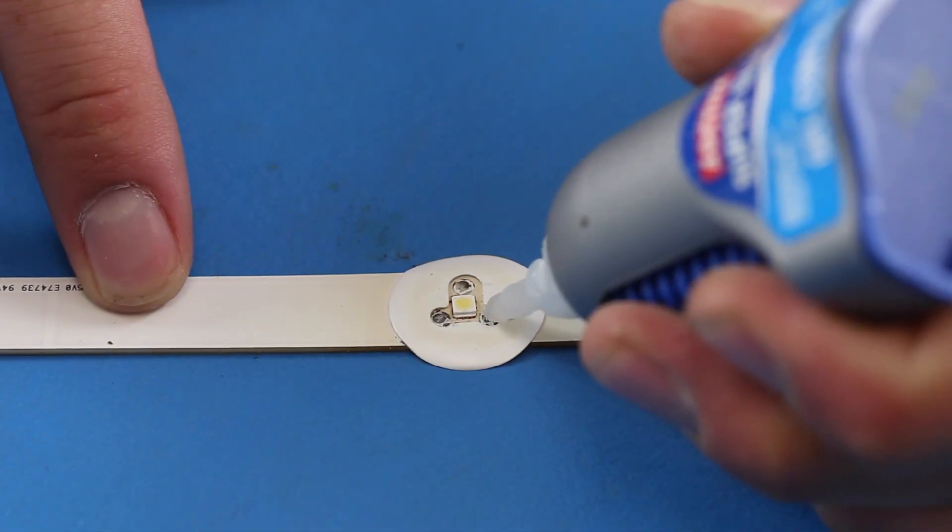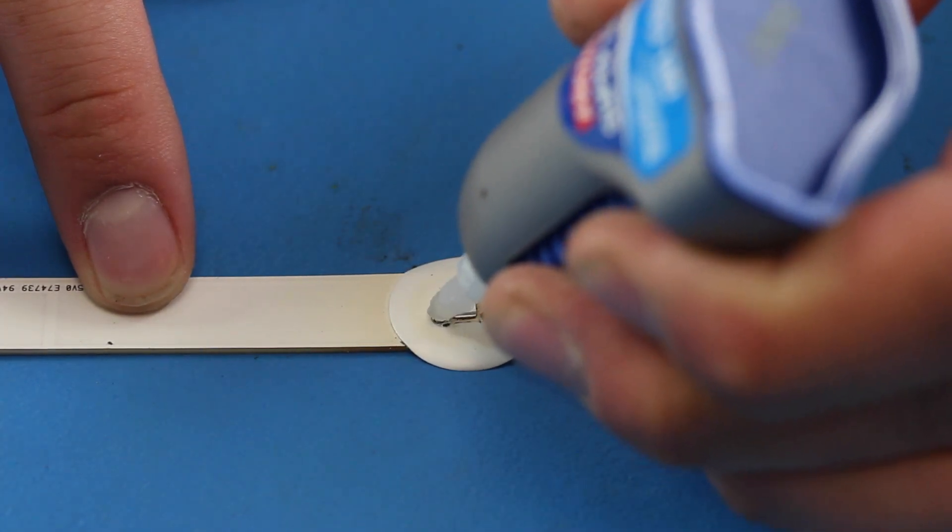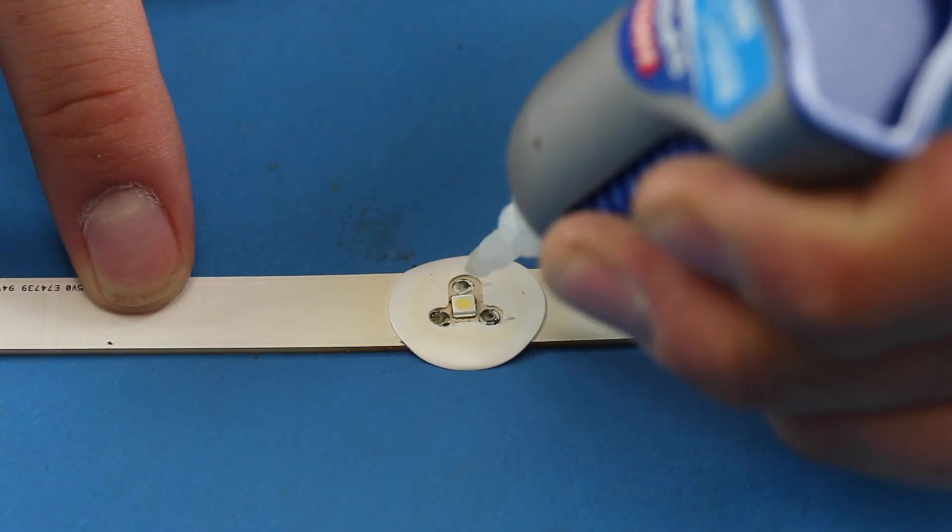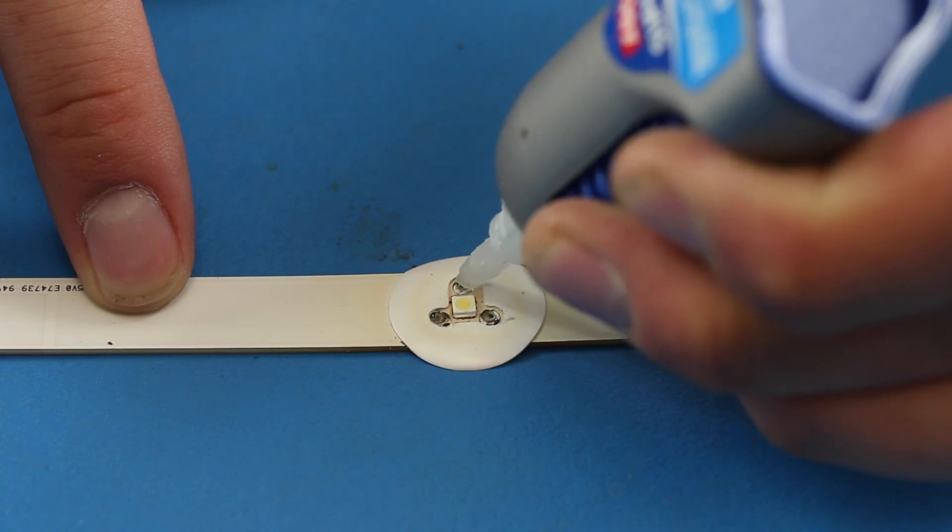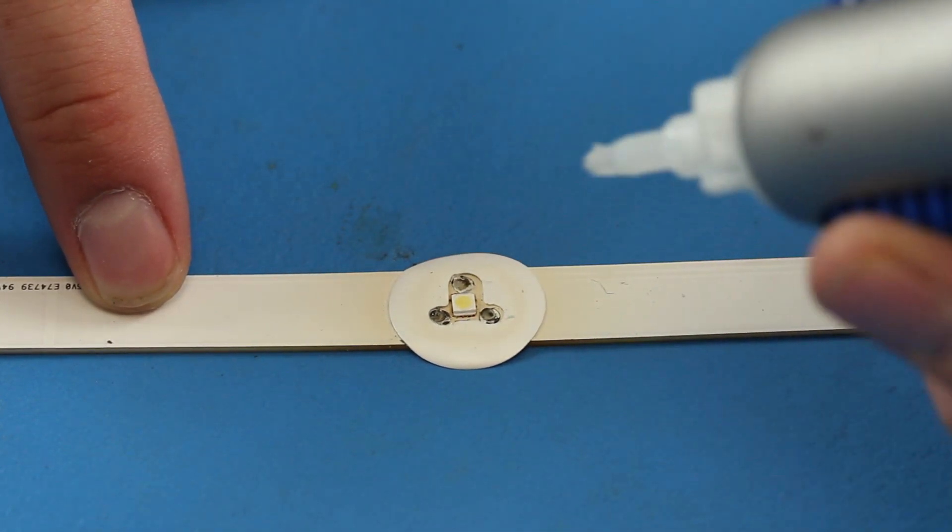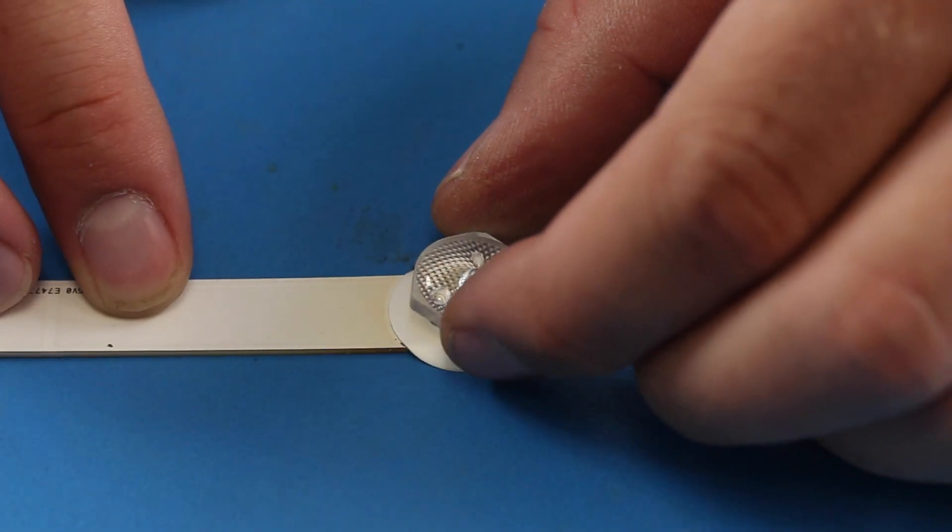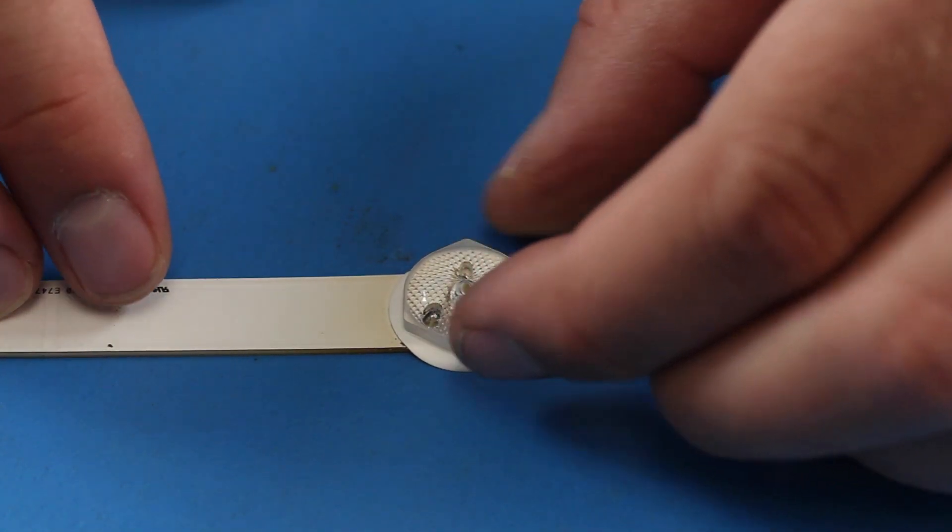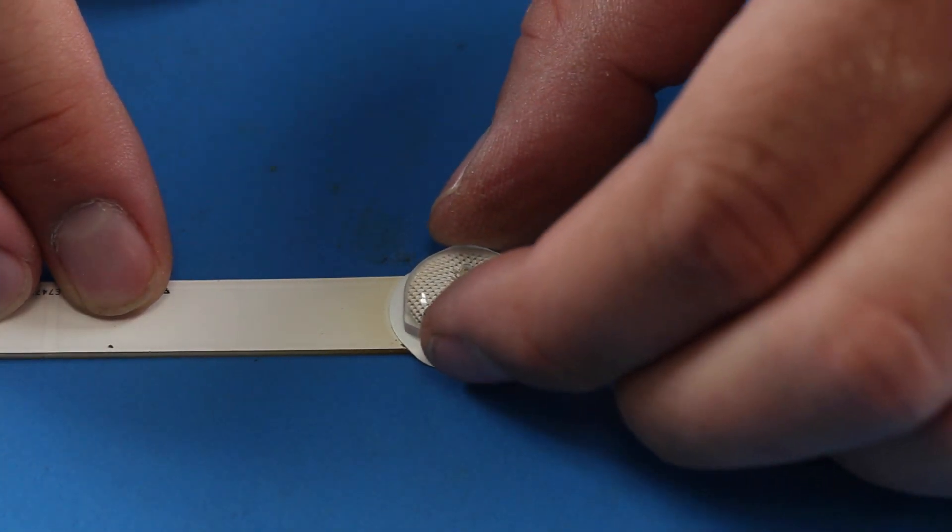Use the super glue on the dots around the LED on the strip. Place the lens diffuser into position and allow the super glue to harden before moving it.